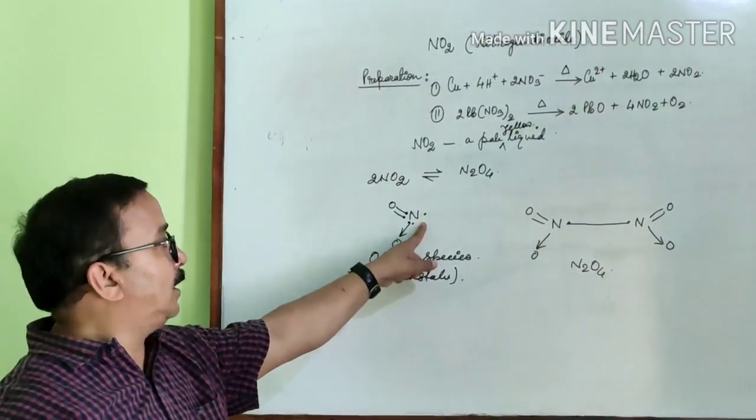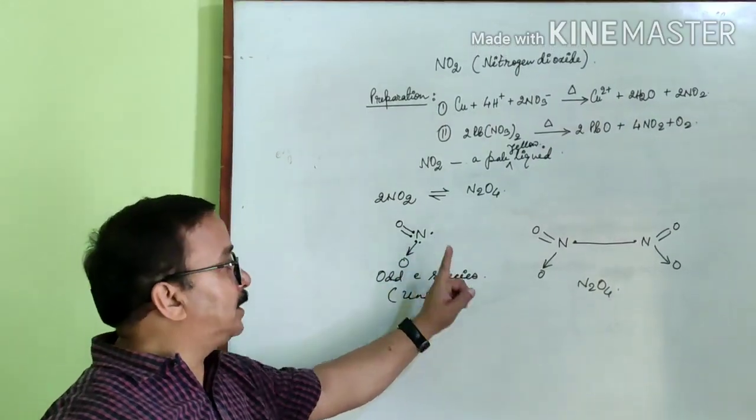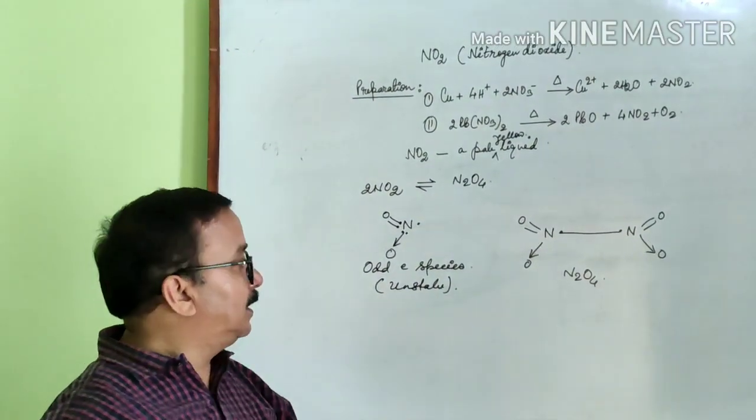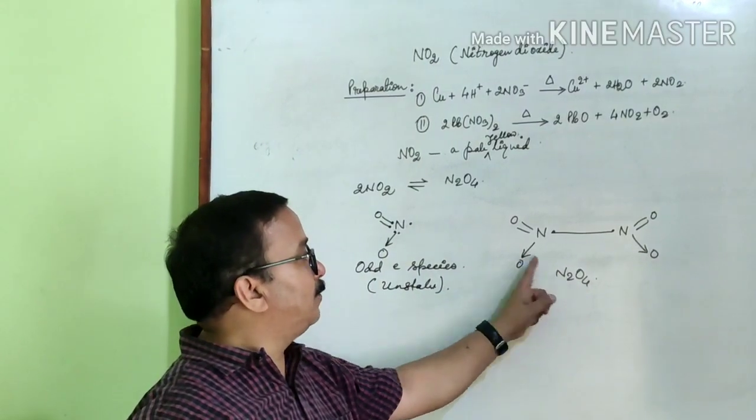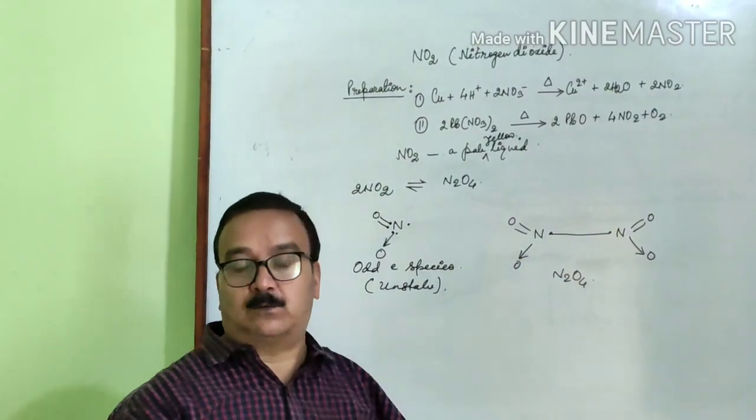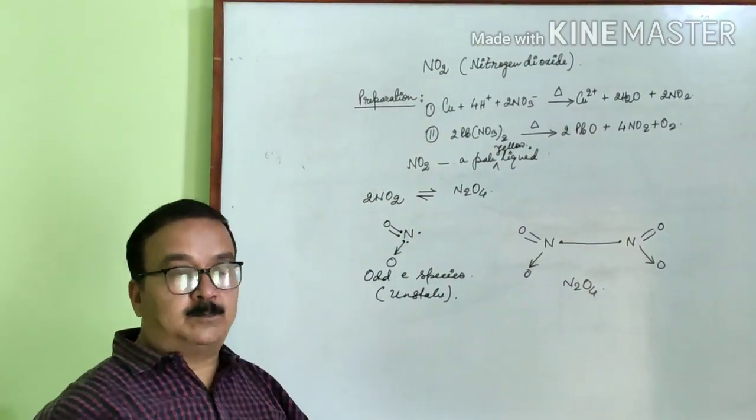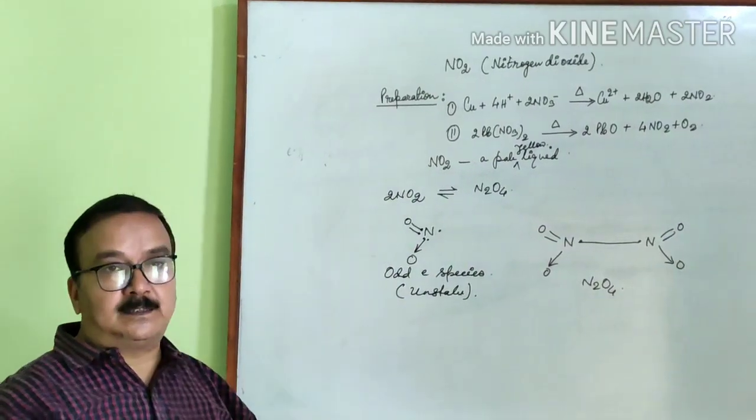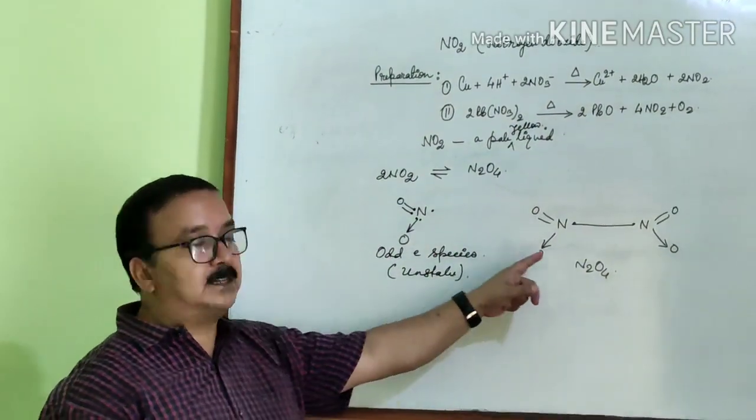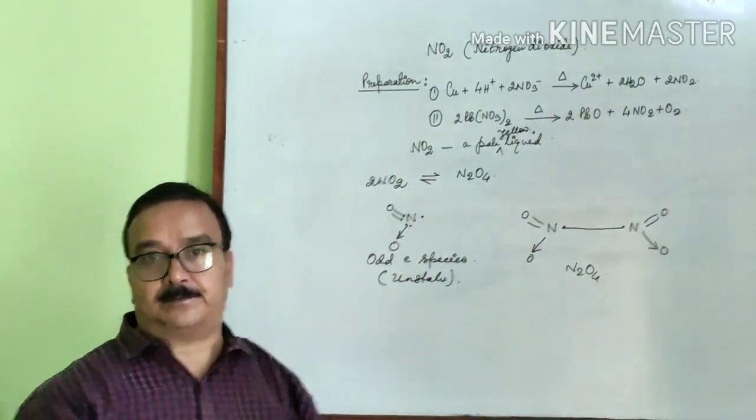But in the liquid or solid state it is diamagnetic because number of unpaired electrons is zero. In examination while answering this question, you have to draw the structures also.